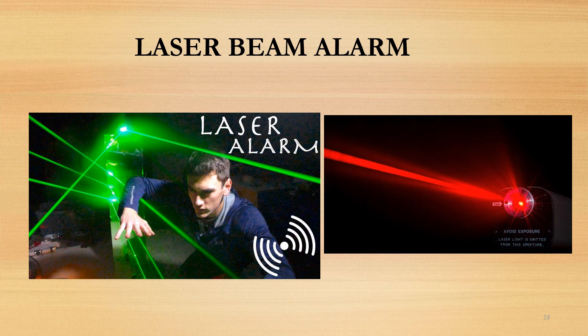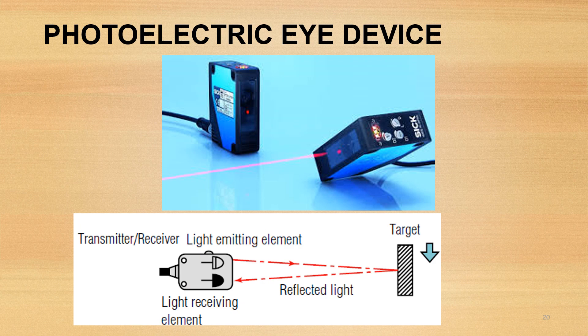Laser beam alarm — a laser emitter floods a wall or fencing with a beam so that when this beam is disturbed by a physical object, an alarm is activated. Photoelectric eye device — a light beam is transmitted at a frequency of several thousand per second.